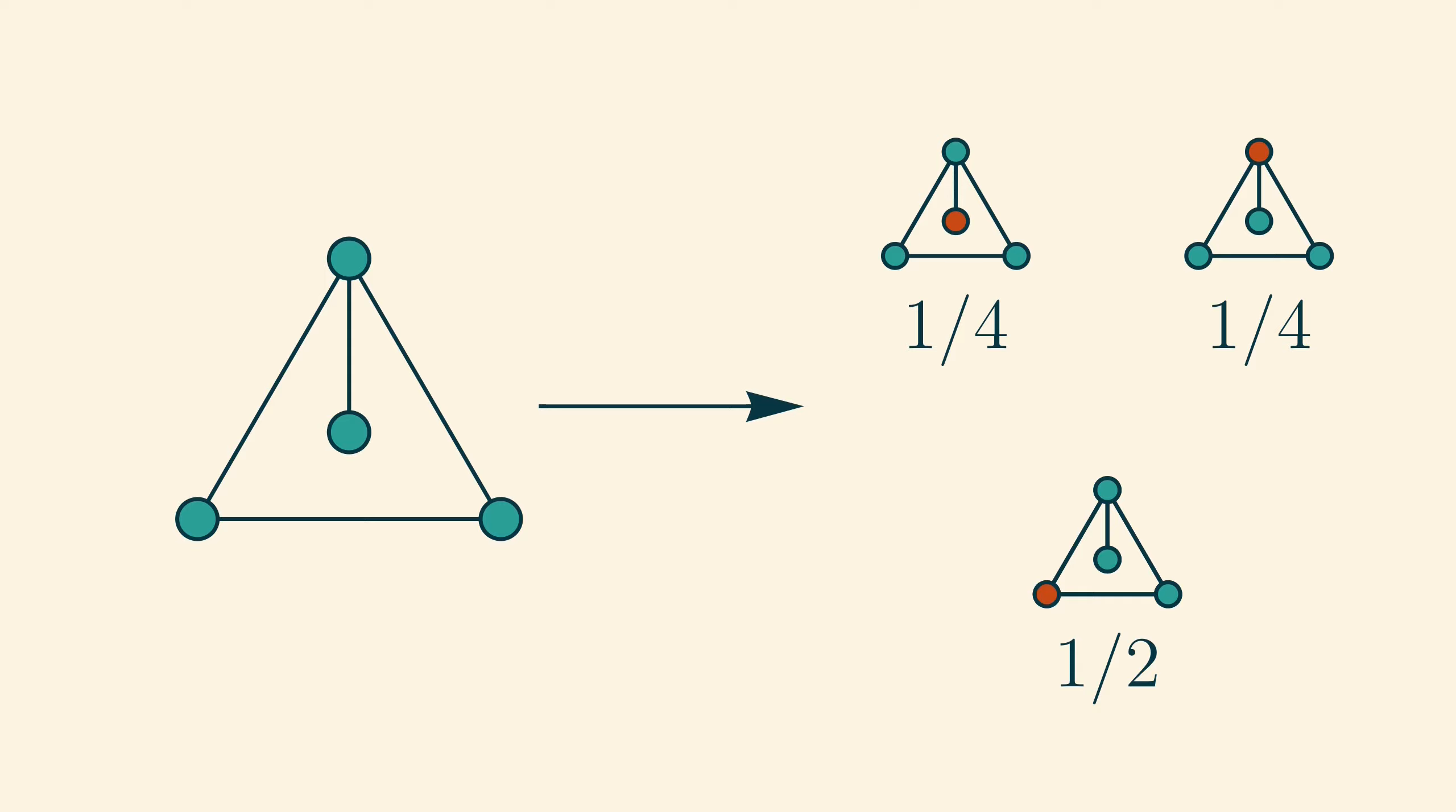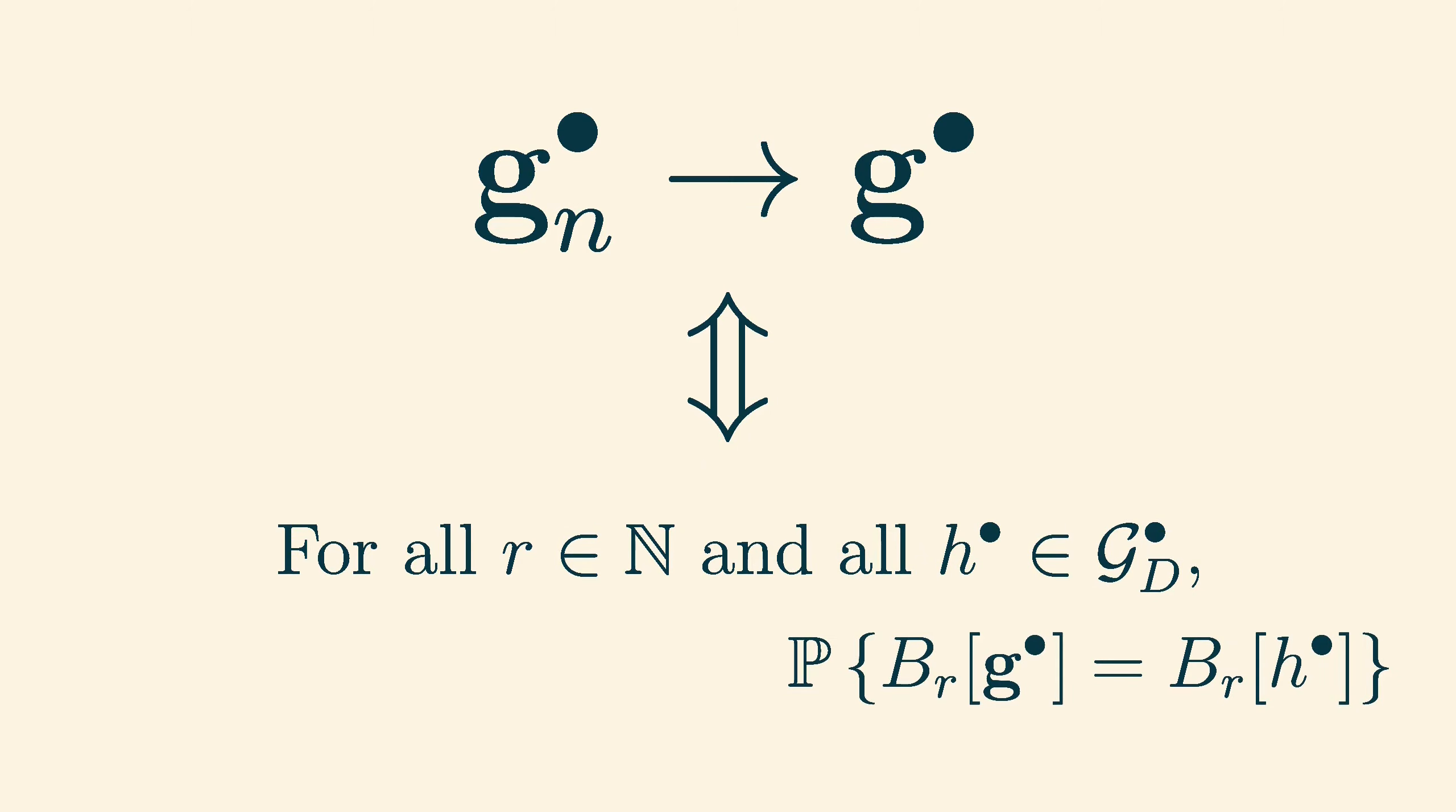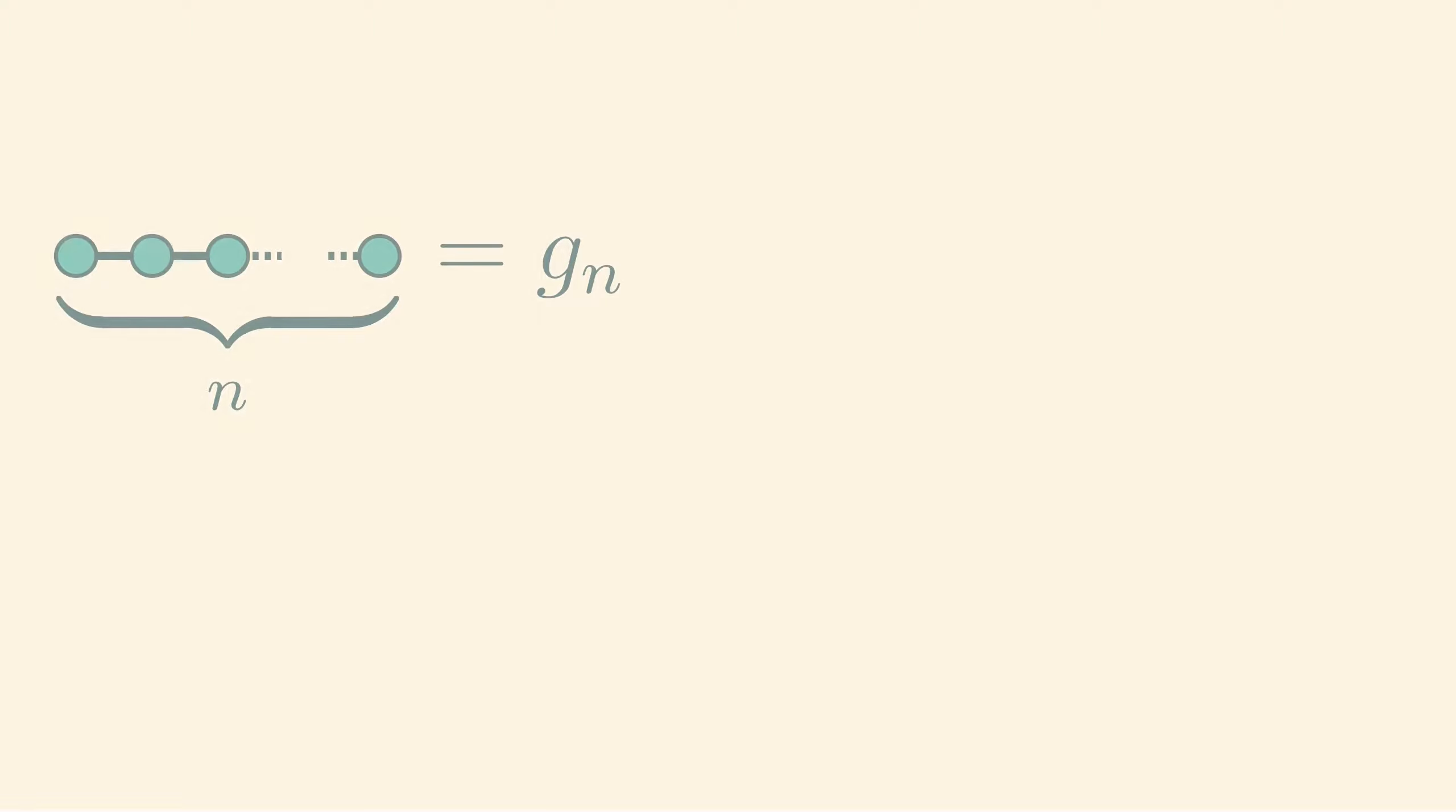Notice that a random rooted graph is simply a random variable which takes values in gd dot, the set of rooted graphs. We will denote random rooted graphs with bold face letters, still keeping the dots to denote the rootedness. And we say that g is the limit of the random rooted graphs gn, if and only if, for all natural numbers r and for all fixed rooted graphs h in gd dot, the probability that the r-ball in g equals the r-ball in h is the limit of the corresponding probabilities for gn.